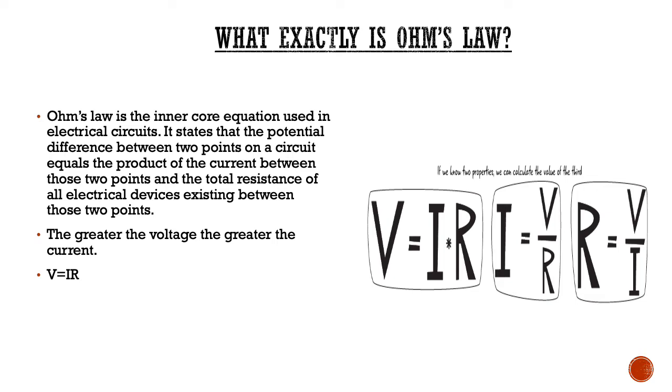Today we're going to be talking about what exactly is Ohm's law. Basically, Ohm's law is the granddaddy equation used in all types of electrical circuits from your very basics to your more complicated circuits. What it says is that the potential difference between two points on a circuit equals the product, that means multiplication, of the current between those two points and the total resistance of all electrical devices existing between those two points.